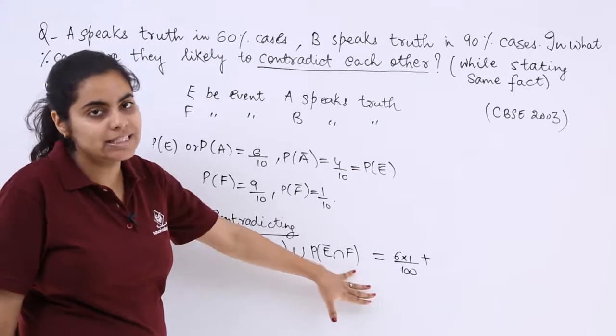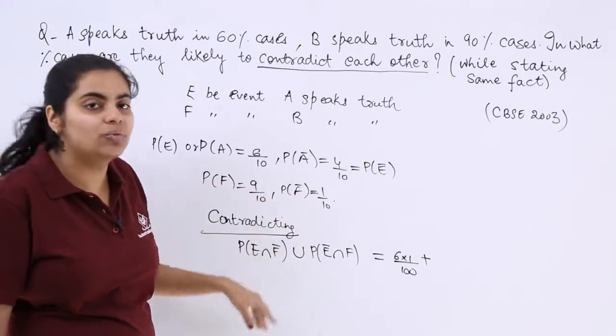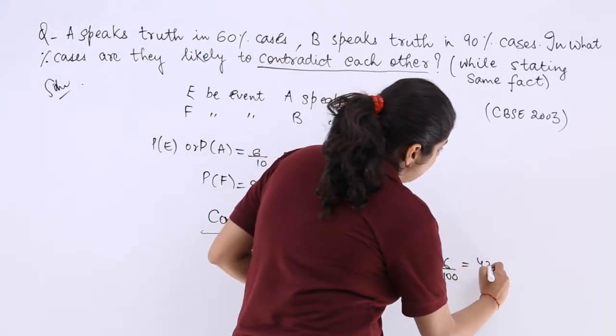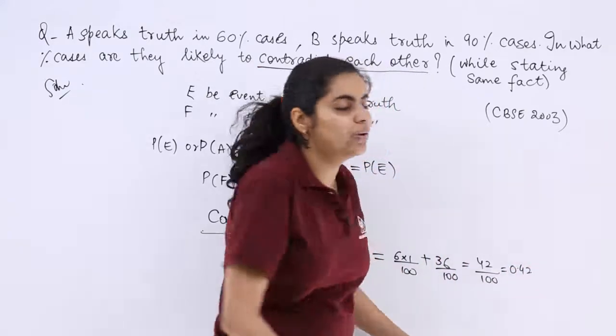So this is E bar intersection F. So that is 4 over 10 intersection 9 over 10 which is 36 over 100. So this makes it 42 over 100 which is 0.42 as the answer.